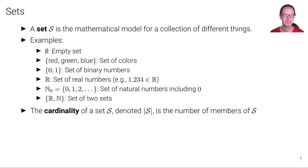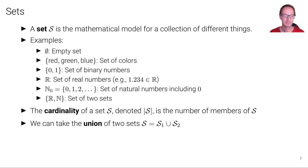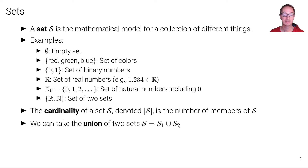The cardinality of a set S, denoted with vertical lines, is the number of members of S. For example, this set has cardinality 2 and this set has cardinality 3. We can also take the union of two sets — this merges the elements of the two sets together. Note that the union of the real numbers and the natural numbers would give us the real numbers, because the natural numbers are already contained in the real numbers.